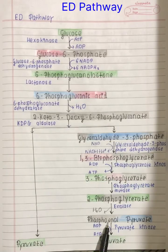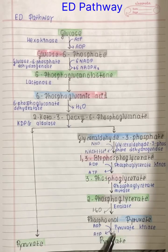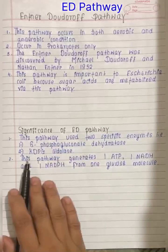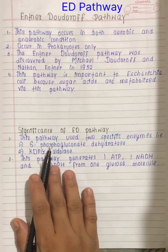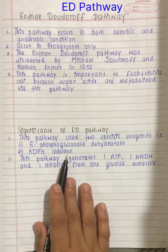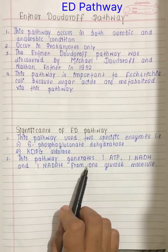The last step is substrate-level phosphorylation, where phosphoenolpyruvate is converted into pyruvate with the help of pyruvate kinase. The phosphate group attached to the 2nd carbon of phosphoenolpyruvate is transferred to ADP to yield ATP. The net yield is 1 ATP from every 1 glucose molecule, as well as 1 NADH and 1 NADPH. This pathway has two specific enzymes: 6-phosphogluconate dehydratase and KDPG aldolase. Overall, this pathway generates 1 ATP, 1 NADH, and 1 NADPH from 1 glucose molecule.